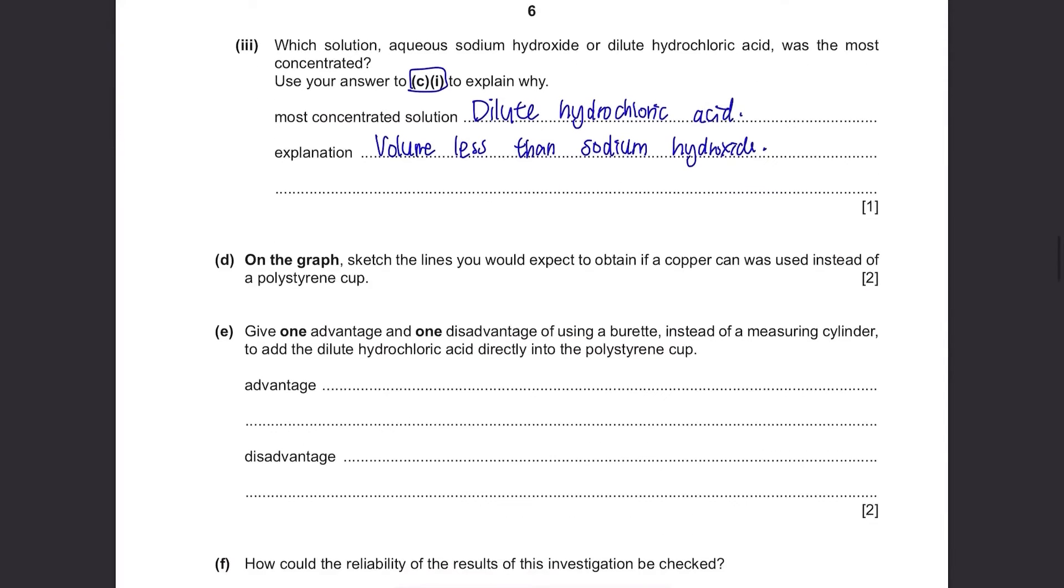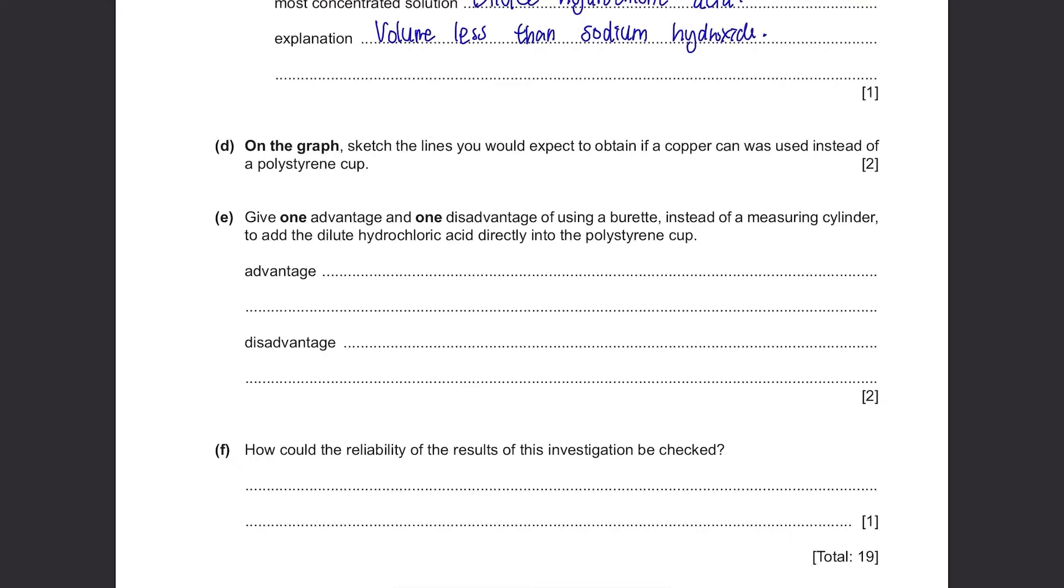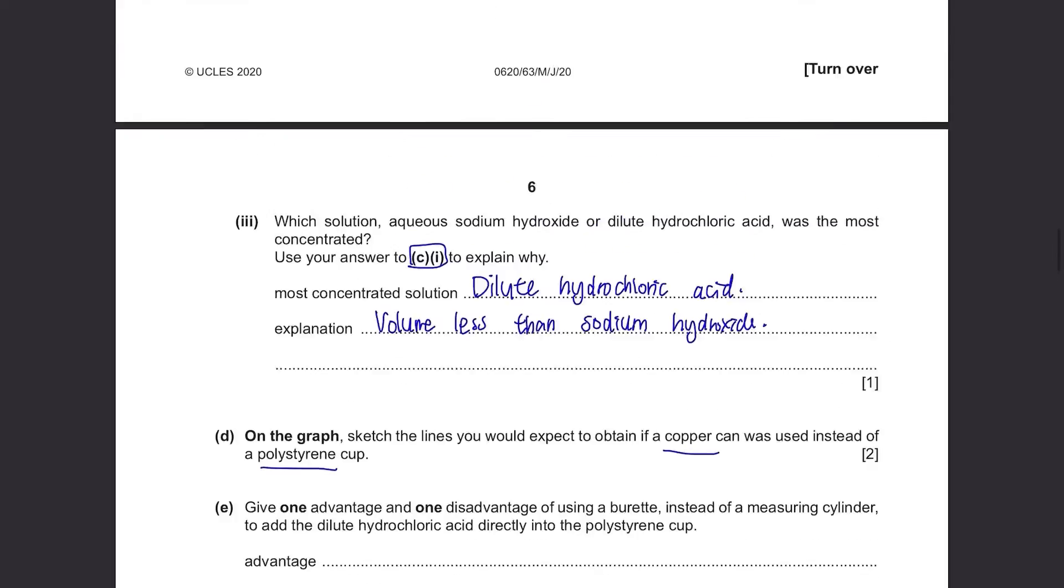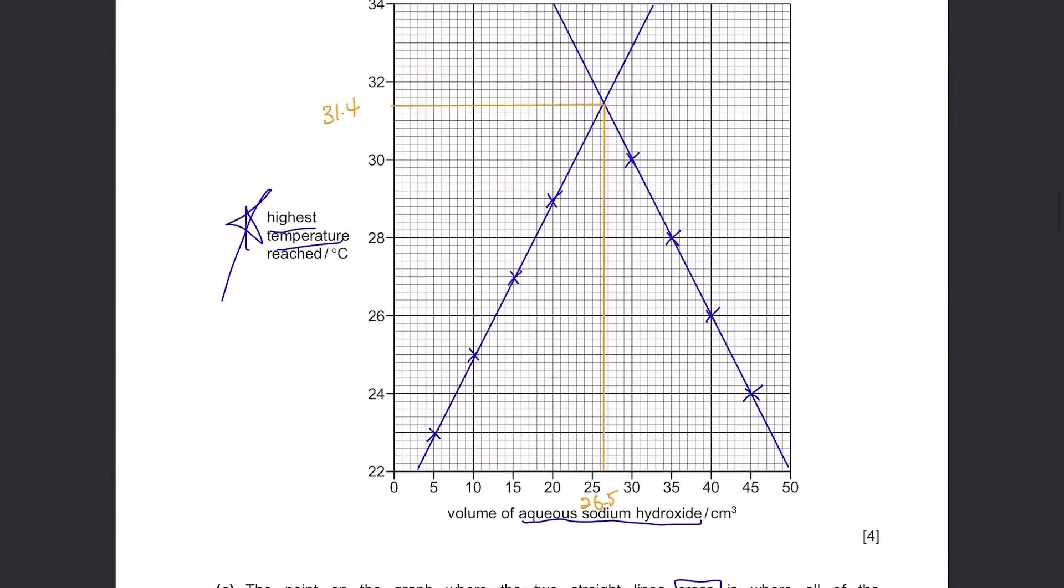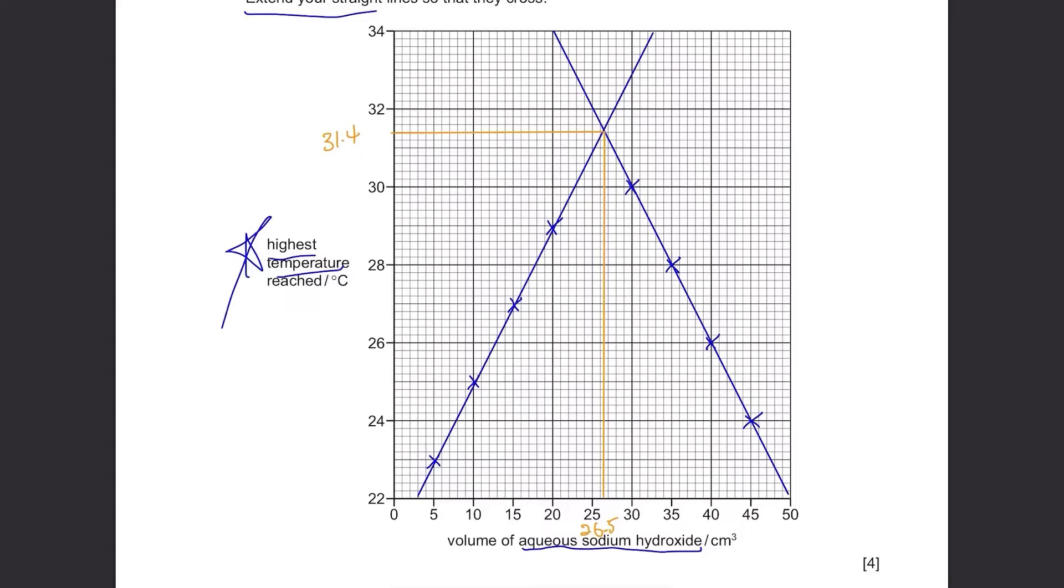Part D: On the graph sketch the lines you'd expect to obtain if a copper can was used instead of a polystyrene cup. Polystyrene is a good heat insulator, so there will be less heat lost due to radiation. However, if you use copper, a lot of heat will be lost due to radiation. So overall, the graph will be lower than the polystyrene graph, but make sure the overall trend is similar to the initial graph.